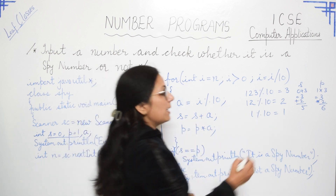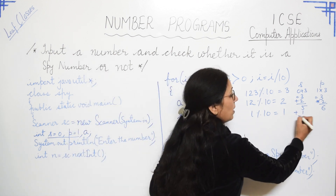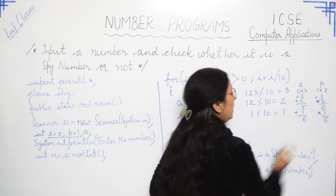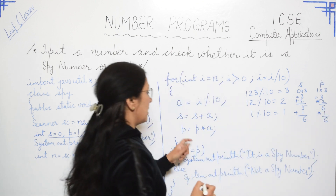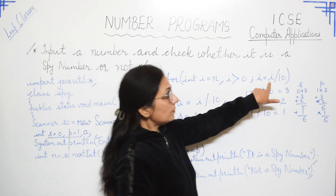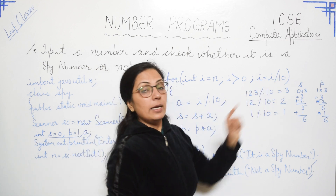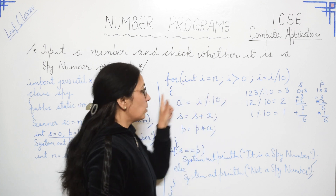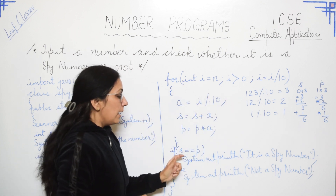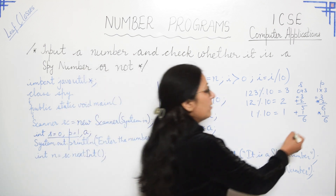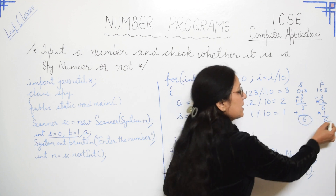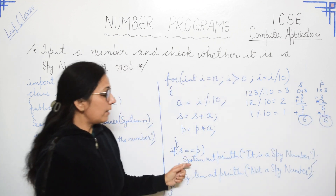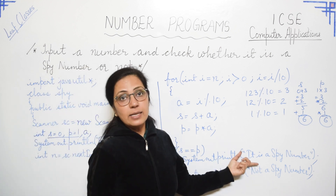s = 5 + 1 = 6, p = 6 × 1 = 6. After this, i = 1 / 10 = 0, so the condition becomes false and we exit the loop. Now we check: s equals p — s is 6 and p is also 6 — so the answer is: 123 is a spy number. I hope this program is clear to all of you.